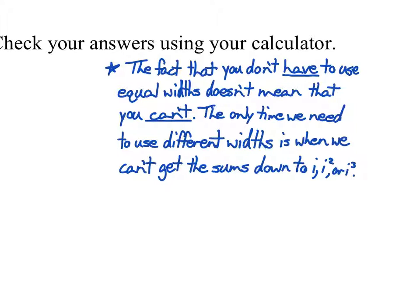In fact, the only time we need to use different widths is when we can't get the sums down to something with an i, or an i squared, or an i cubed. Like when we had the square root of x yesterday. We got that down, if we would have tried it with equal widths, we would have gotten down to just something like the square root of i. And we don't have a formula for the sum of the square roots of i. We don't know how to find that sum. So, we wouldn't have been able to actually figure out the result. But, by using i squared over n squared, then we square rooted it, and we had just a plain i, and an i squared, and stuff. And we were able to actually do things that we had the formula for.